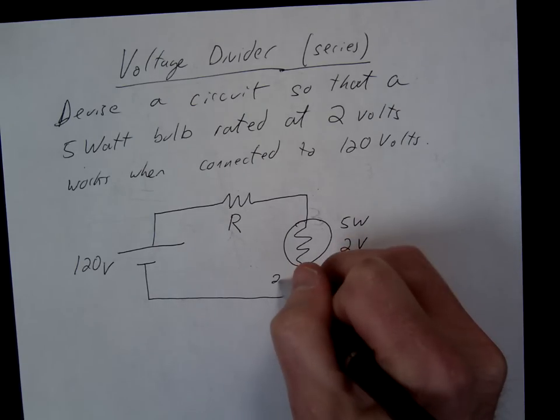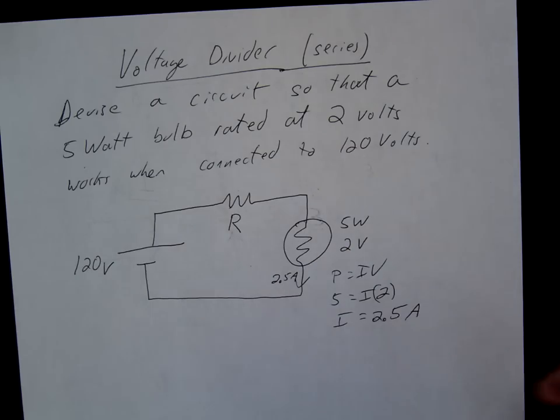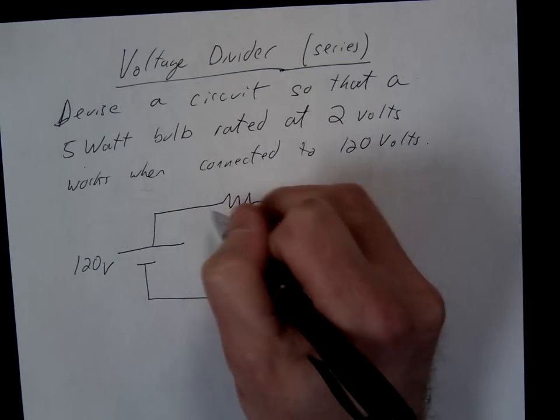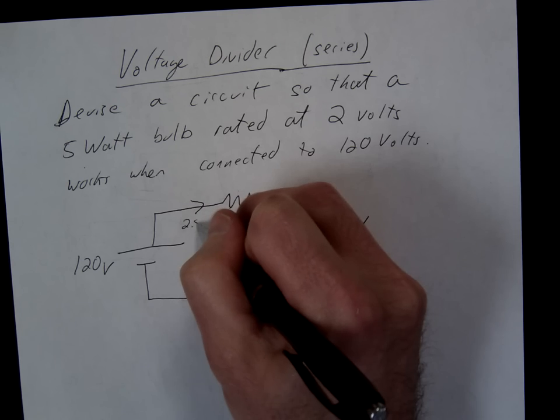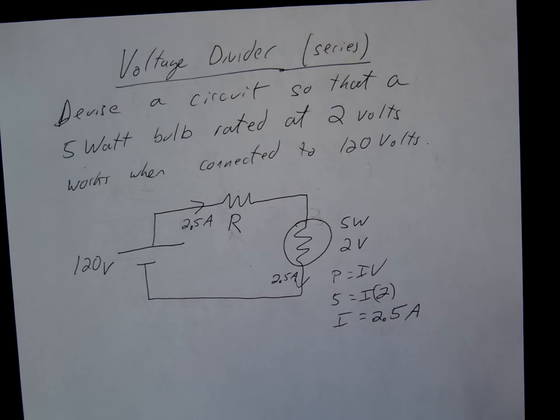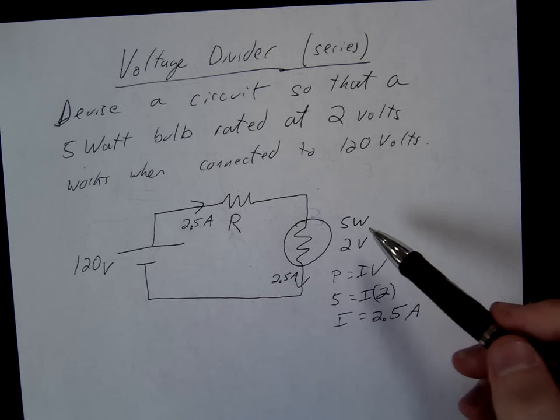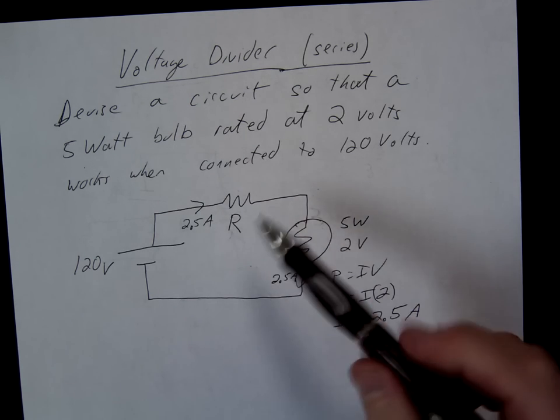So we found the current through here. But what's the current through here? It's the same because it's a series circuit, so they only get one current. Okay, that's Kirchhoff's current law.